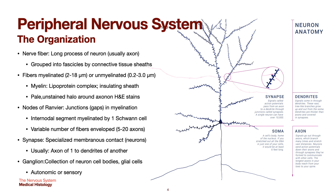With the organization of the peripheral nervous system, the nerve fiber is a long process of a neuron, usually the axon. They are grouped into fascicles by connective tissue sheets. Fibers may be myelinated or unmyelinated. The nodes of Ranvier are the junctions or gaps in your myelination. Synapses are specialized membranous contacts made up of neurons. The ganglion is a collection of neuron cell bodies and glial cells, and can be autonomic or sensory.